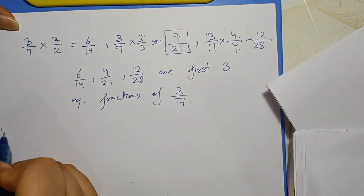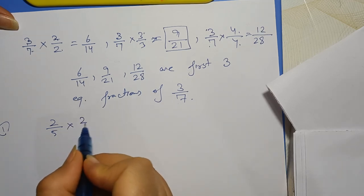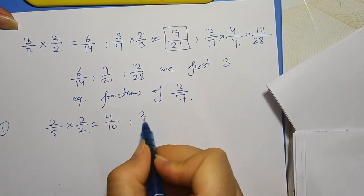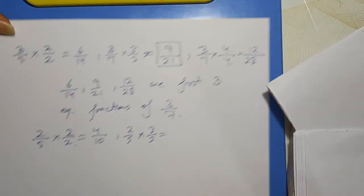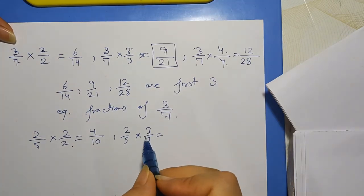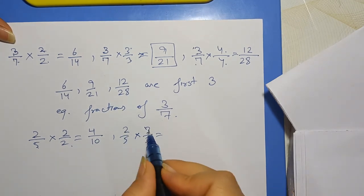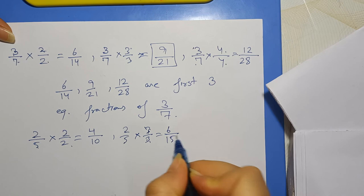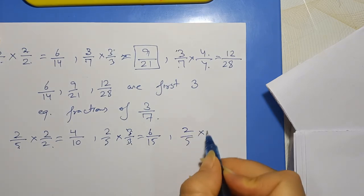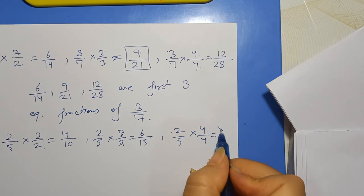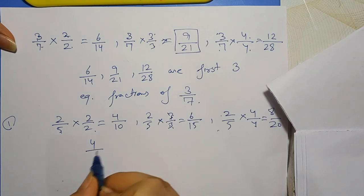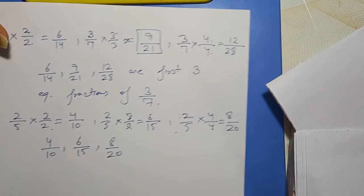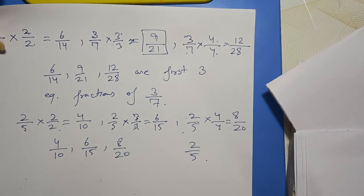Ab doosra wala: 2 by 5 diya hua hai. 2 se multiply karo: 2 twos are 4, 5 twos are 10 — 4/10. 3 se multiply karo — yaad rakhna, equivalent fraction banate waqt numerator aur denominator dono ko same number se multiply karna hai: 2 threes are 6, 5 threes are 15 — 6/15. 4 se karo: 2 fours are 8, 5 fours are 20 — 8/20. So 4/10, 6/15, 8/20 are equivalent fractions of 2/5.